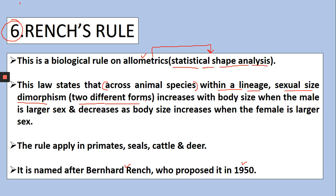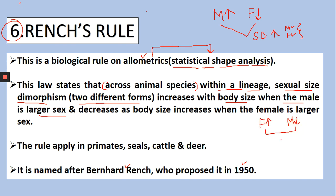So what this rule states, based on statistical shape analysis, is that if body size is increasing — meaning when the male is larger in size in any species — then in that case sexual dimorphism will increase. You will clearly be able to see that this is male and this is female; they will look different. But in the opposite case, if the female is larger and the male is smaller, then sexual dimorphism will decrease. In terms of size you can tell, but their overall structure will look roughly the same. This rule is also applied to primates, seals, cattle and deer, and was proposed in 1950.